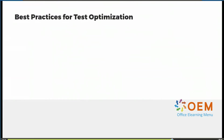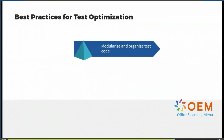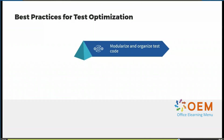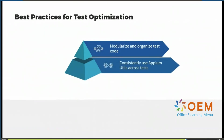Now let's cover best practices for optimizing our tests. One best practice is to always code your test scripts using a modular approach, which enables you to organize your code and create easy-to-follow scripts. In addition, consistently use APM utils across different tests in order to standardize your approach.